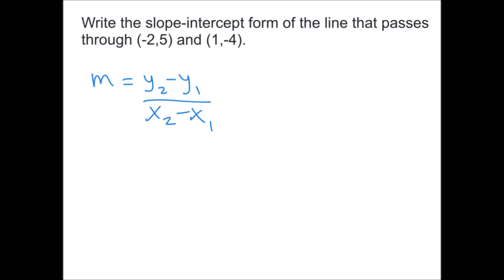Now we'll write the slope-intercept form of a line passing through two points — the least amount of information you can be given to find an equation. First we need the slope, which we weren't given. So we'll use the slope formula. Label the points x1, y1 and x2, y2 to stay careful about what we plug in.